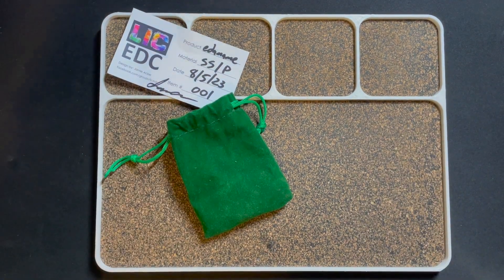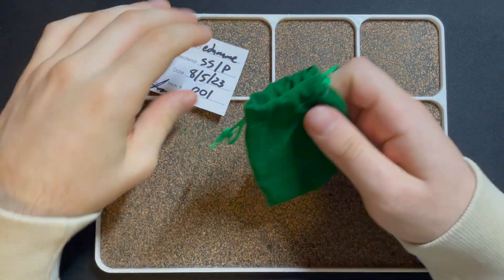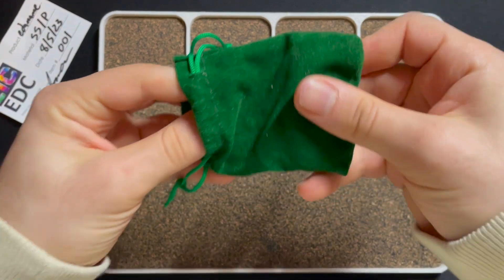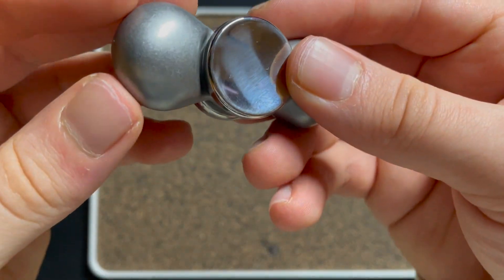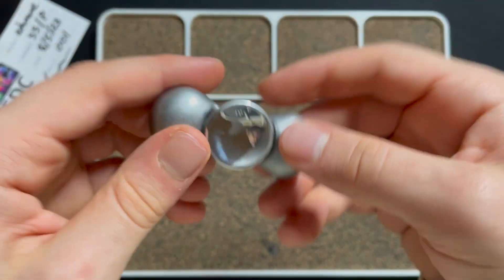Alright, I'm gonna be right back in a second. Check out my scale and stuff like that. And yeah, let's go ahead and open it. There we go. Stainless steel edamame.